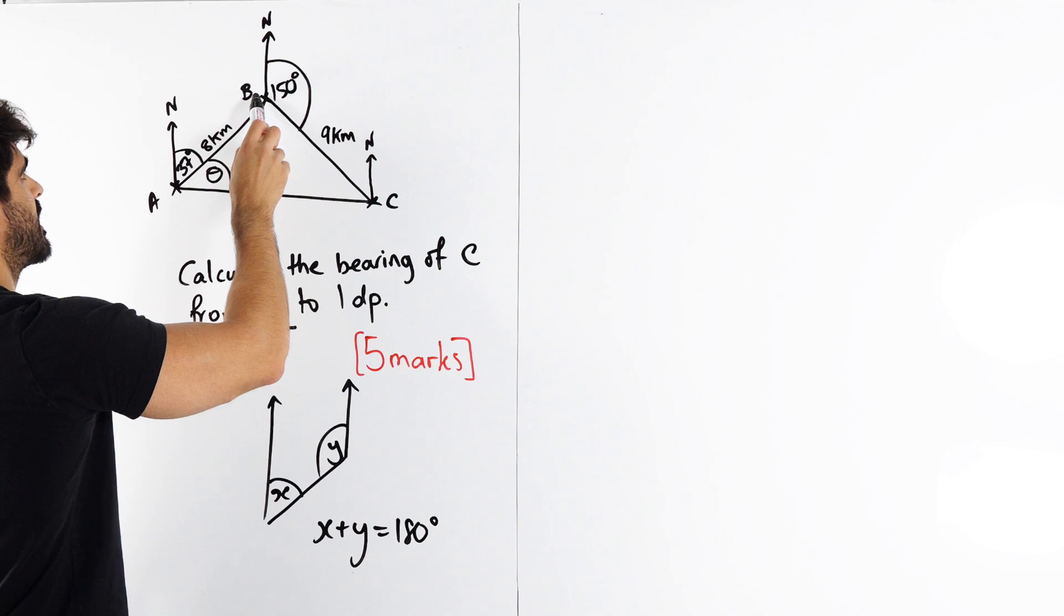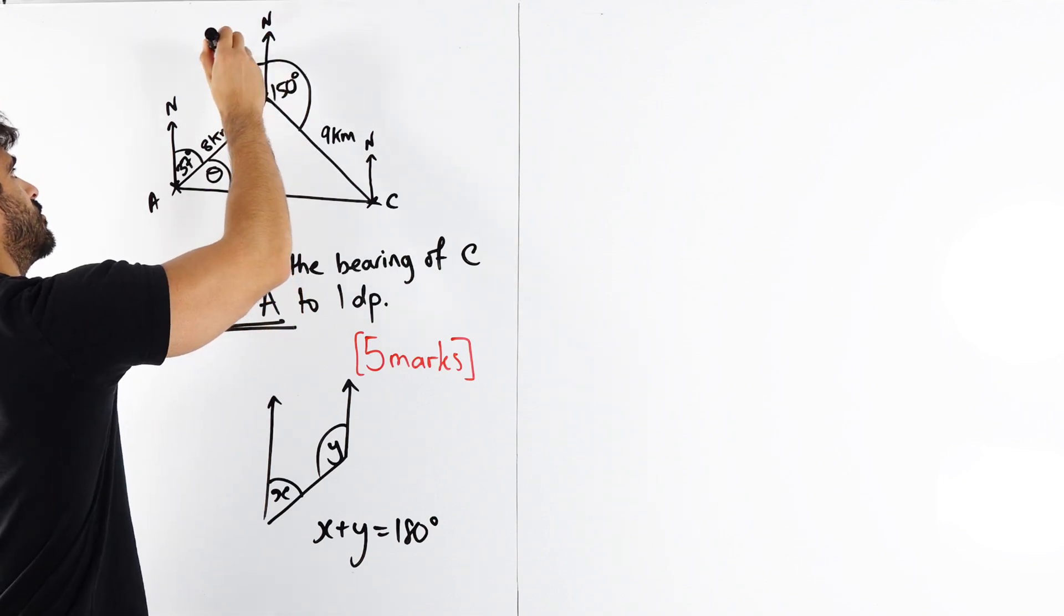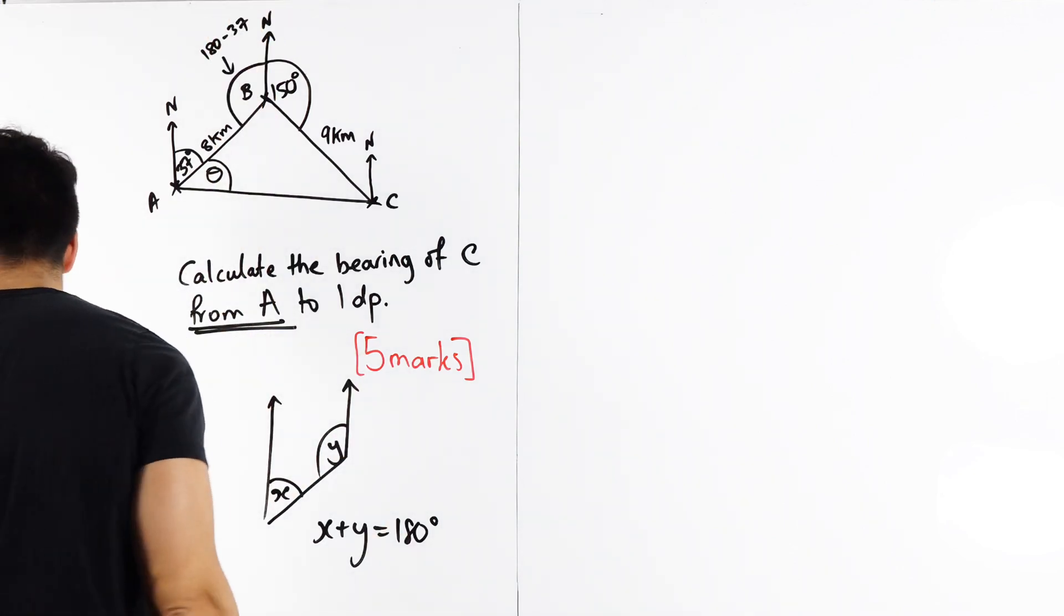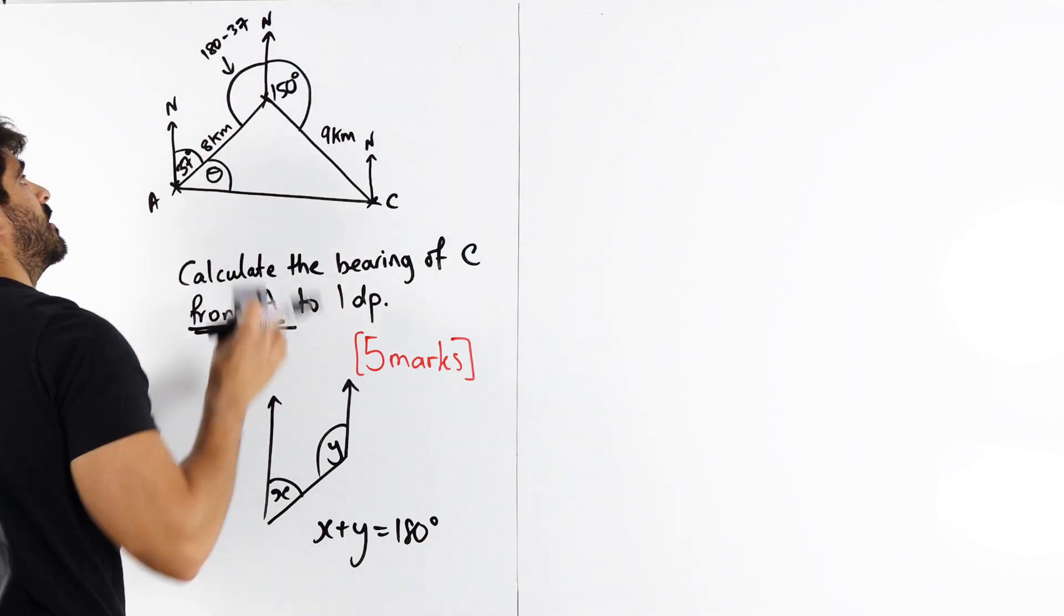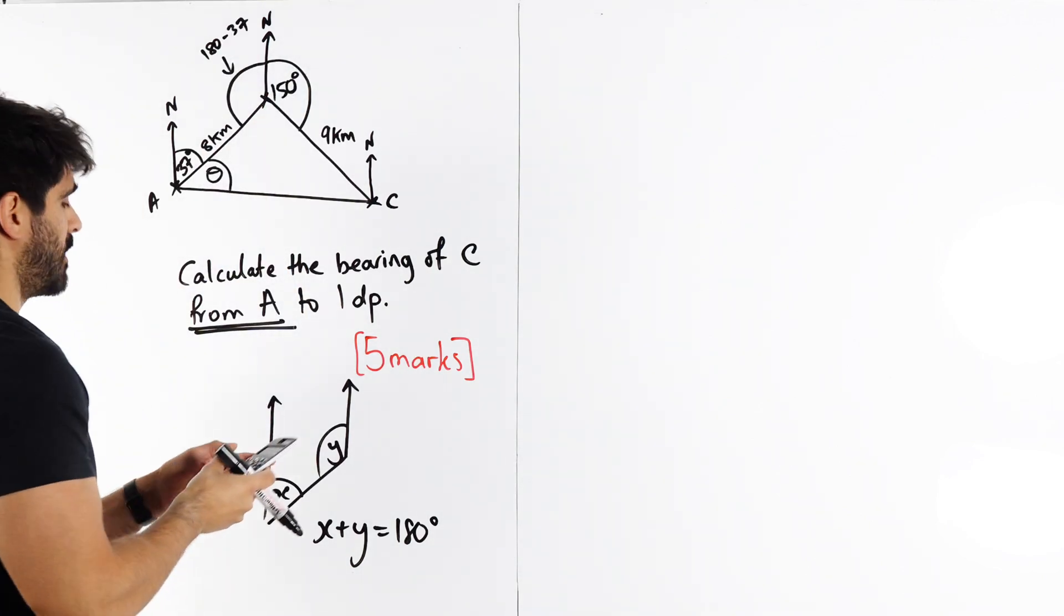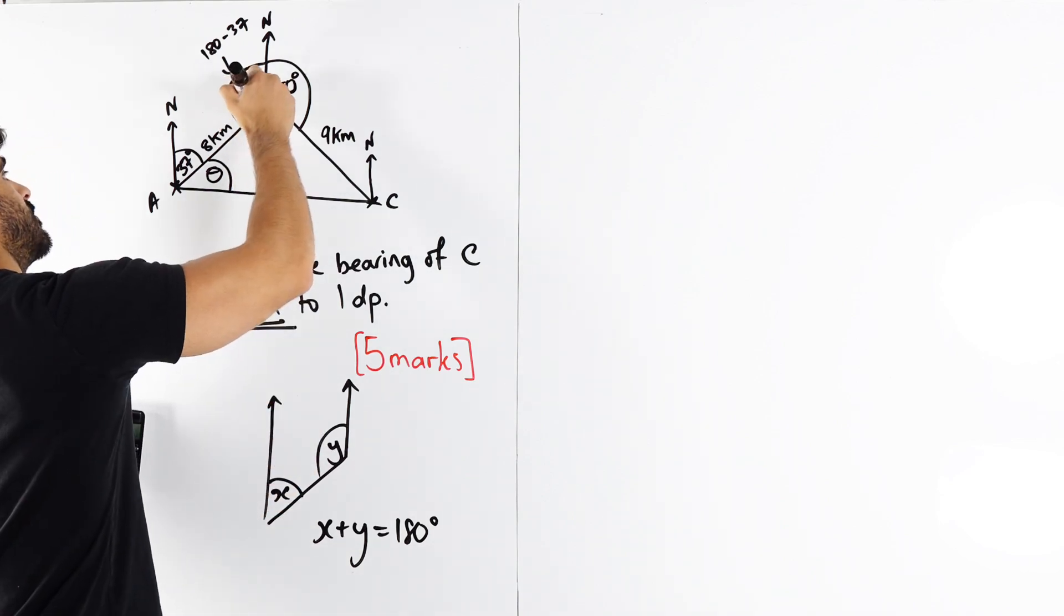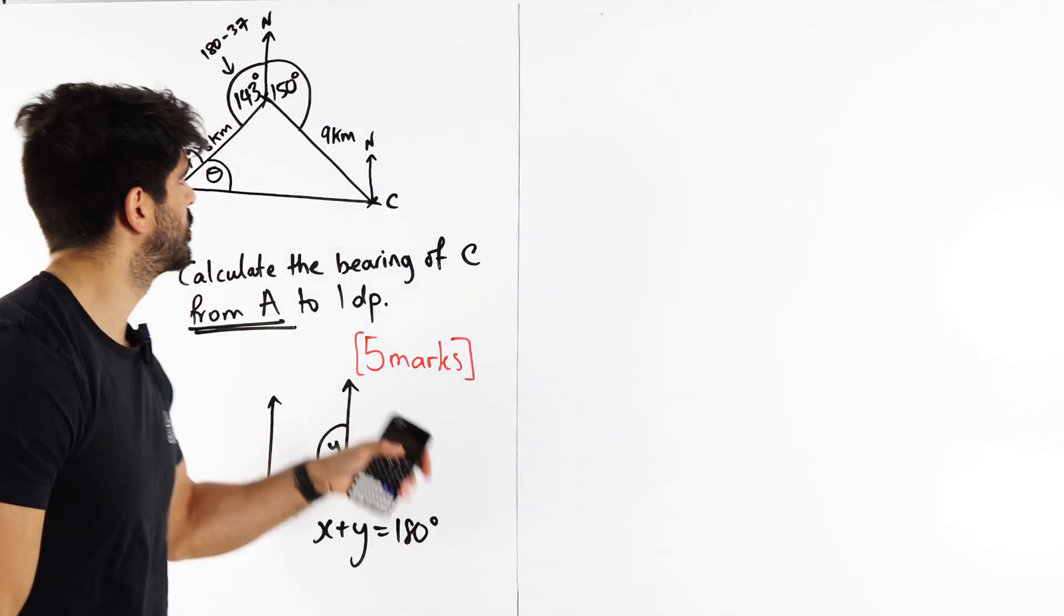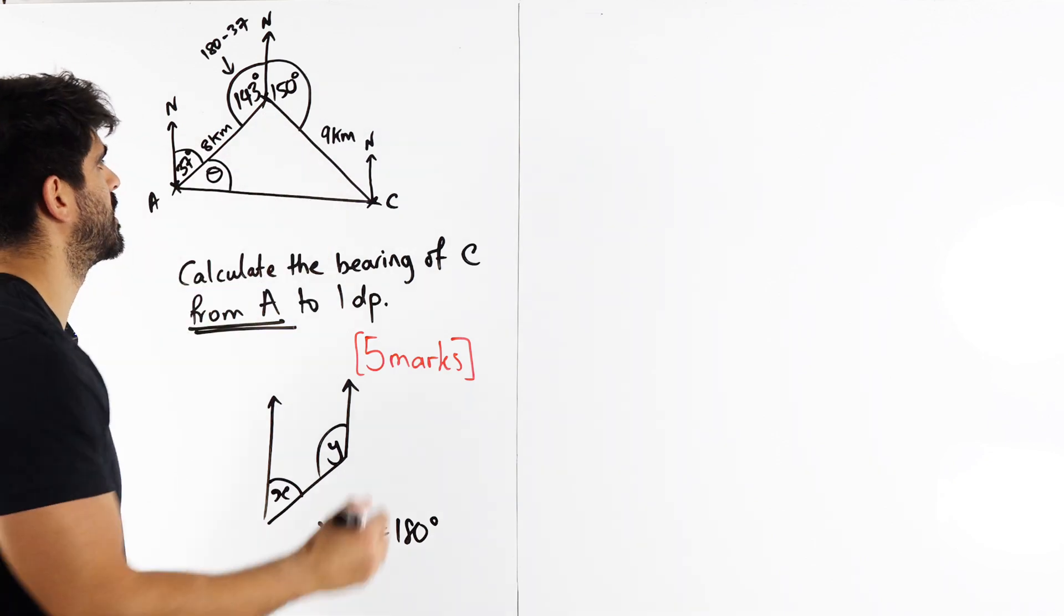Well, if this is 37, then this angle over here will be 180 minus 37 using that rule, my co-interior angles rule. I'm just going to get rid of this B. Just so I can do my maths, 180 minus 37 before I make a mistake is 143 degrees. And if you guys want, you could do this one as well. That's the interior of 150. This one here would be 30.